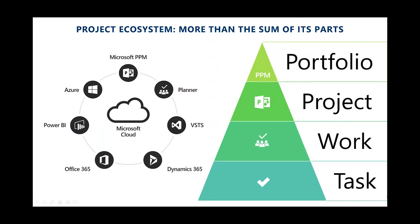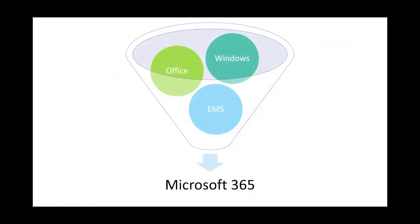The second sales motion — attach and expand — is for those interested in selling higher-end workloads. This is about selling the ecosystem: Office 365 or Microsoft 365. The project ecosystem is more than the sum of its parts. We have our PPM solution combining the three Project Online offerings, Microsoft Project for managing projects, Planner for managing work, and Microsoft Tasks for managing tasks — all working together with Office 365, Dynamics, and Visual Studio.